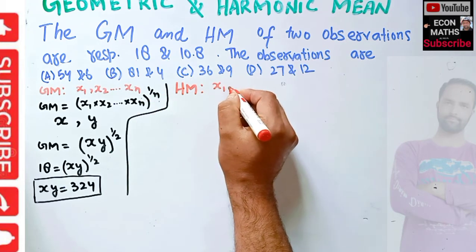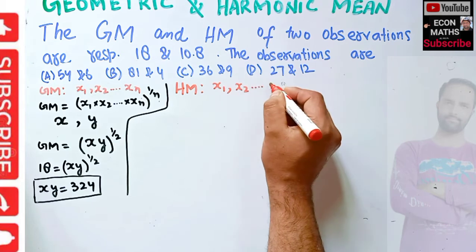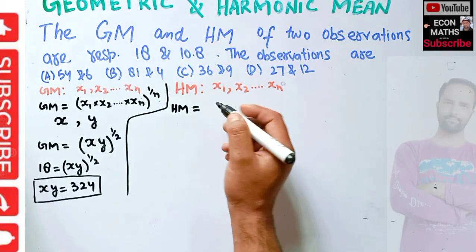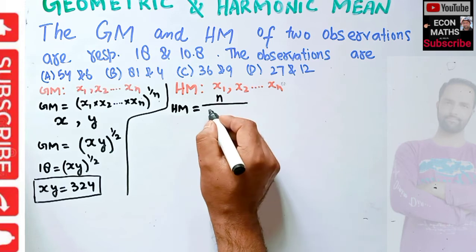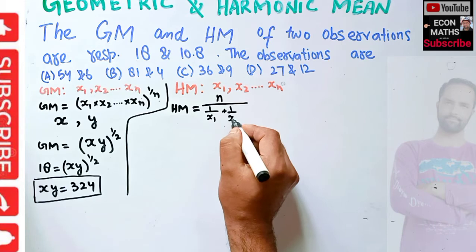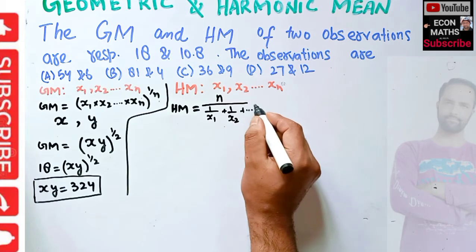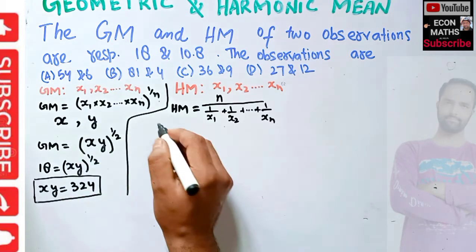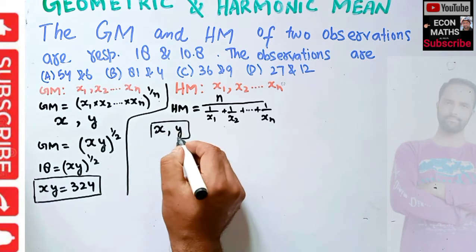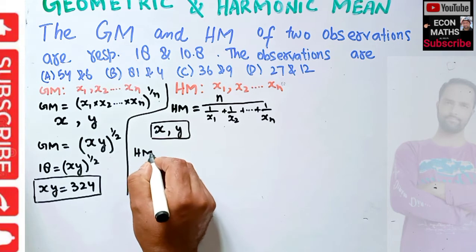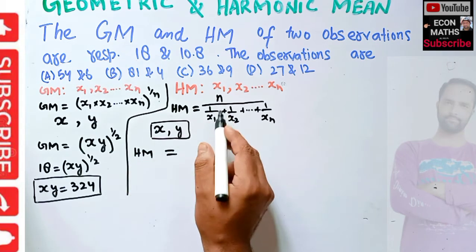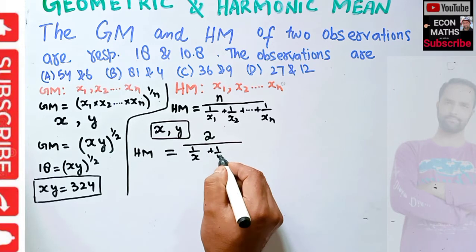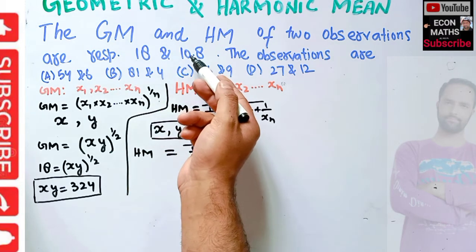Now let's talk about the harmonic mean. Again, if we have observations X1, X2, up to Xn, the harmonic mean of n observations equals n divided by the sum of 1/X1 plus 1/X2 plus so on up to 1/Xn. Since we have only two observations X and Y, their harmonic mean equals 2 divided by 1/X plus 1/Y.